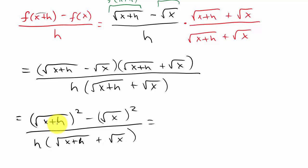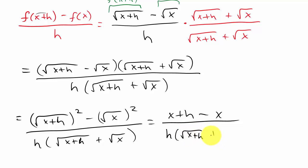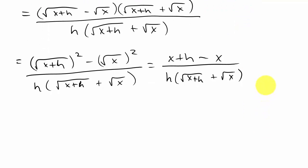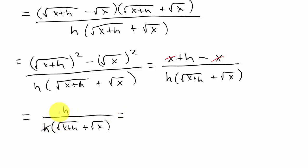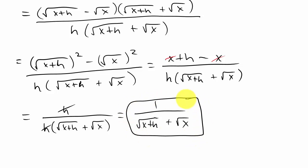When you square a square root you just get what's underneath. So squaring gives x plus h minus x, over h times the square root of x plus h plus the square root of x. The x's cancel, leaving h over h times the square root of x plus h plus the square root of x. The h's cancel and I'm left with 1 over the square root of x plus h plus the square root of x. That's my answer. Hopefully this video helped you — thanks!